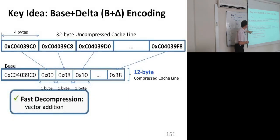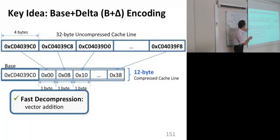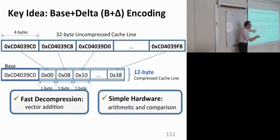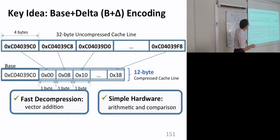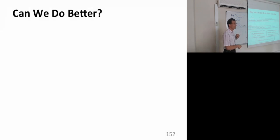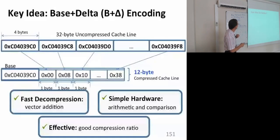The advantages of this approach: decompression is really fast. To decompress the cache line, you take the base and add it in parallel to all of the differences, and you get the uncompressed cache line. This is basically a vector addition — a single addition operation performed on multiple data elements. It has simple hardware because all you need is arithmetic and comparison, and there's no variable-length compression within the cache block.